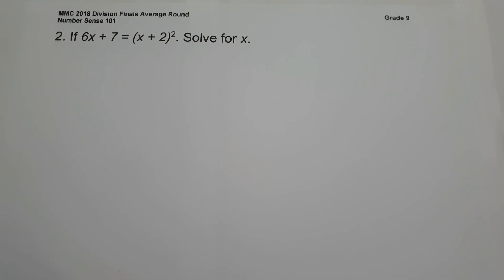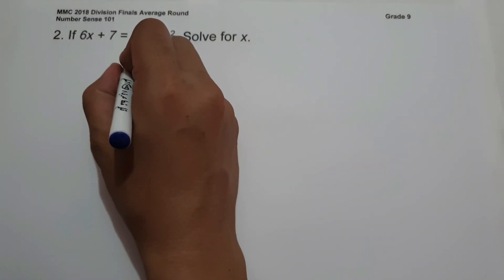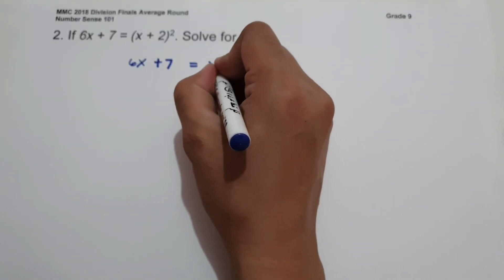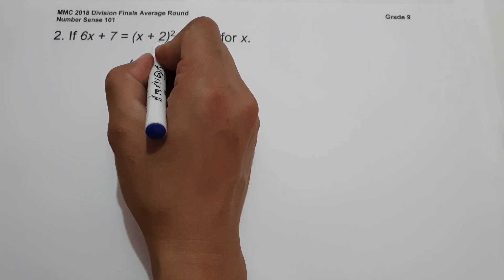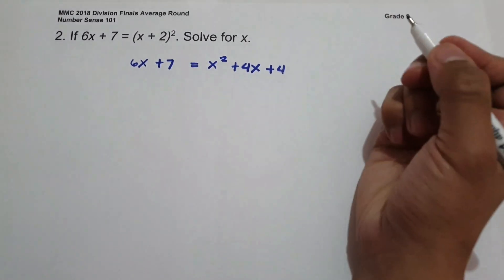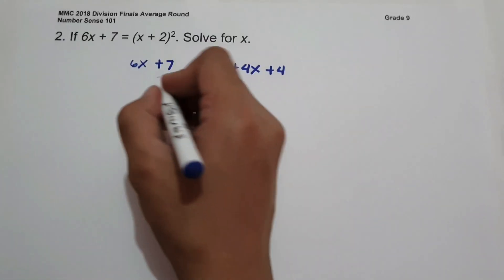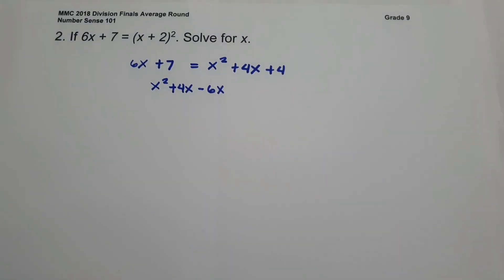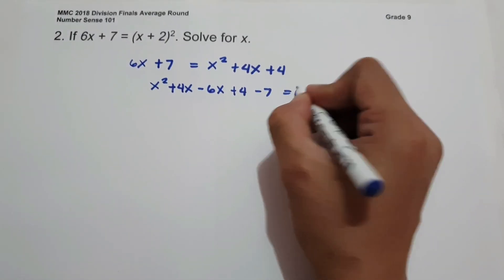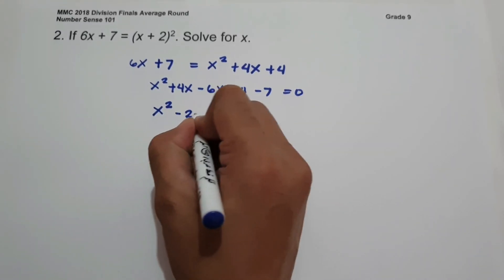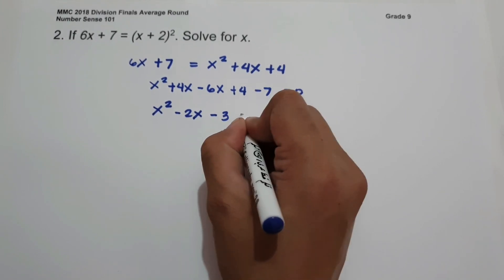On number 2, if 6x plus 7 equals the quantity of x plus 2 squared, solve for x. We have 6x plus 7 equals the expansion of the binomial squared: x times x is x squared, x times 2 is 2x, and then 2 times x is 2x more, and the constant 2 times 2 is 4. So the right side expands to x squared plus 4x plus 4. Moving 6x plus 7 to the other side gives x squared plus 4x minus 6x plus 4 minus 7 equals 0, which simplifies to x squared minus 2x minus 3 equals 0.